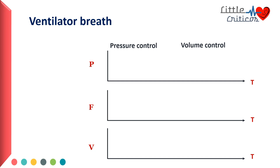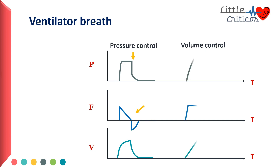Let us try to understand the scalars in pressure control and volume control breaths. In a pressure control breath, the flow is variable and the pressure remains constant. In volume control breaths, the flow remains constant whereas the pressure delivered is variable. It is important to look at the flow characteristics in order to differentiate a pressure and volume control breath.